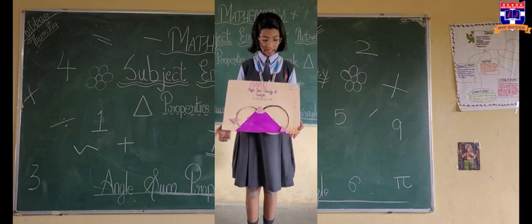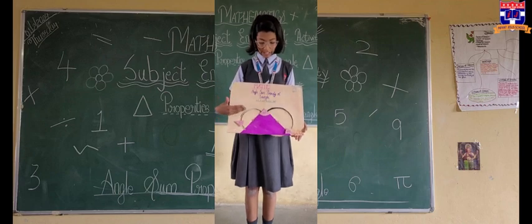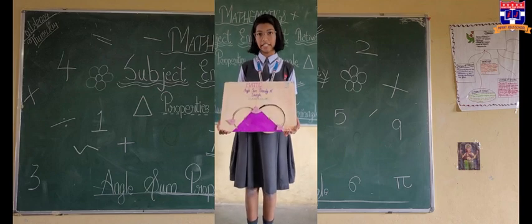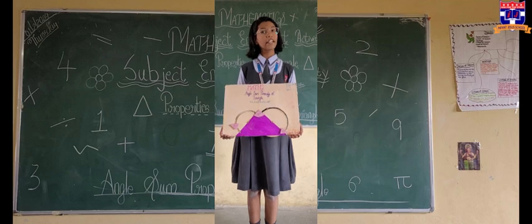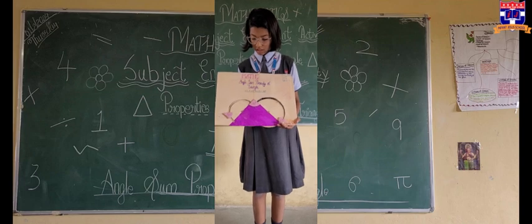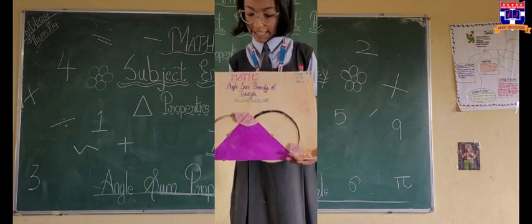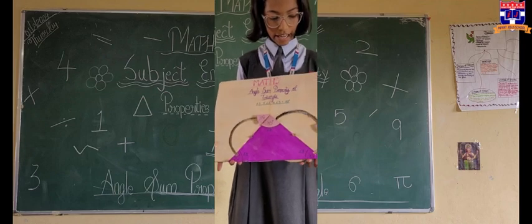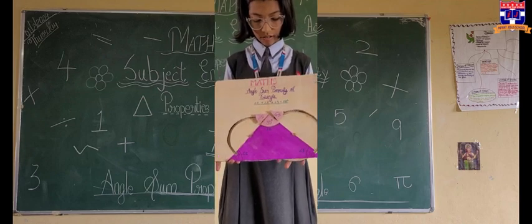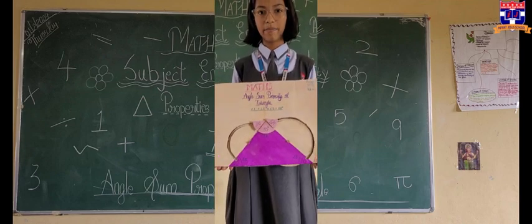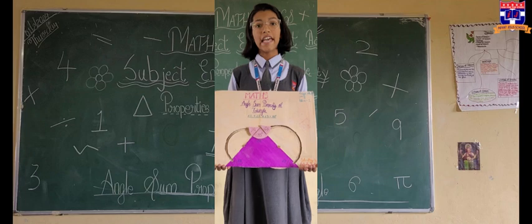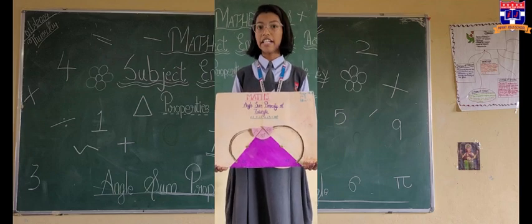I have made one triangle whose angles are 45 degrees, 85 degrees, and 50 degrees. We all know that the angle sum property is 180 degrees. If we add all three angles we get 180 degrees. Now we can see that all three angles make 180 degrees. Hence it is true that all three angles of a triangle make 180 degrees.